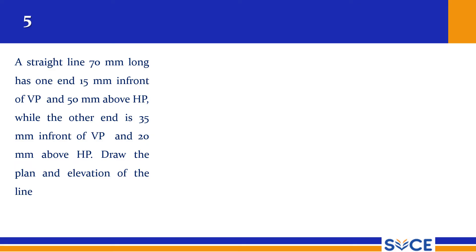Next problem: a straight line 70 mm long has one end 15 mm in front of VP and 50 mm above HP, while the other end is 35 mm in front of VP and 20 mm above HP. Draw the plan and elevation of the line. This is the same kind of problem. The only difference is that 50 mm makes the first point farther away, so the direction is slightly different. If you are clear with the concept, you can easily do this.